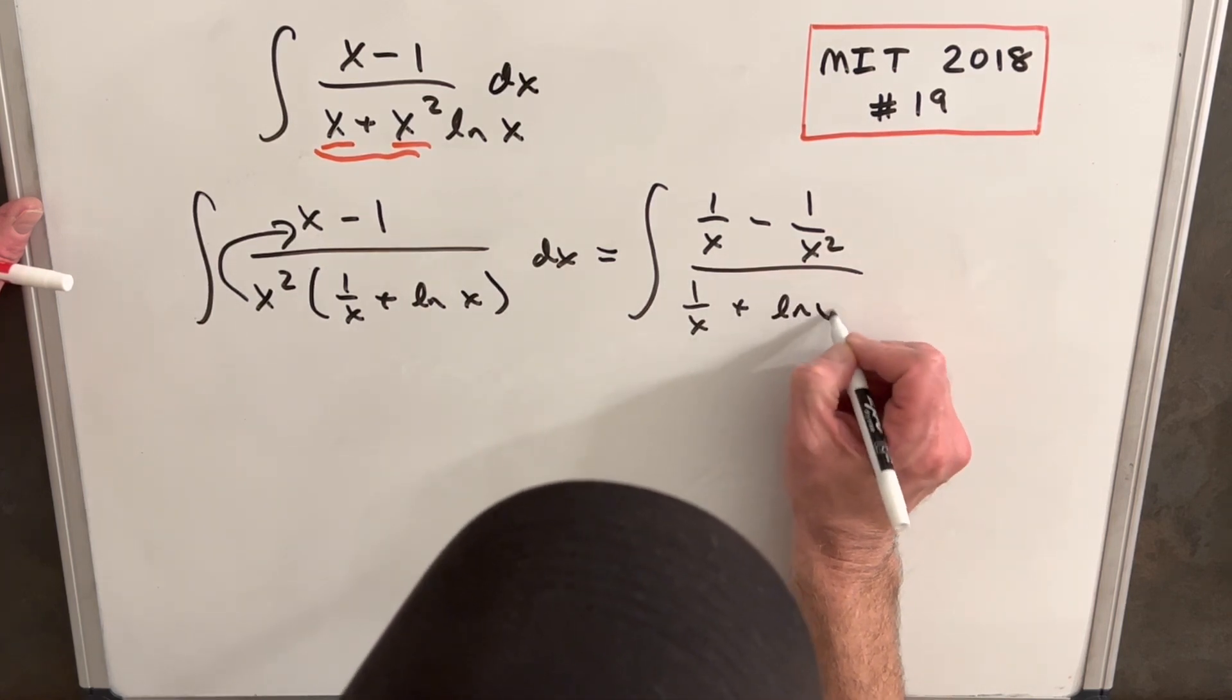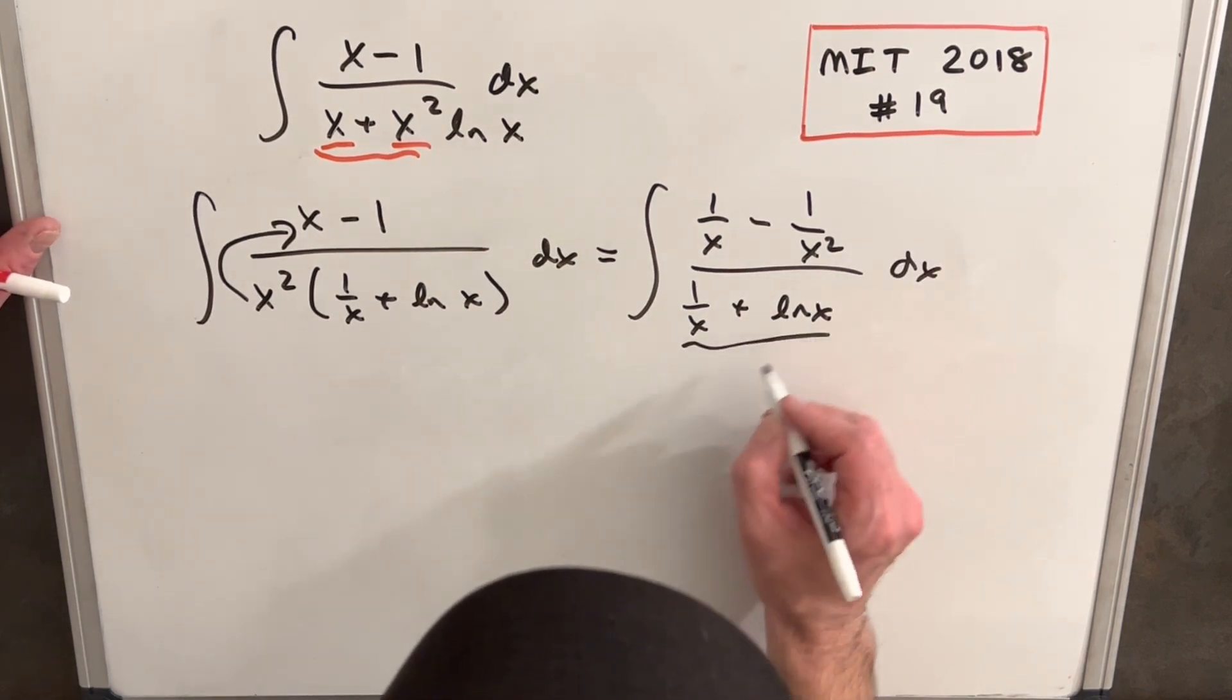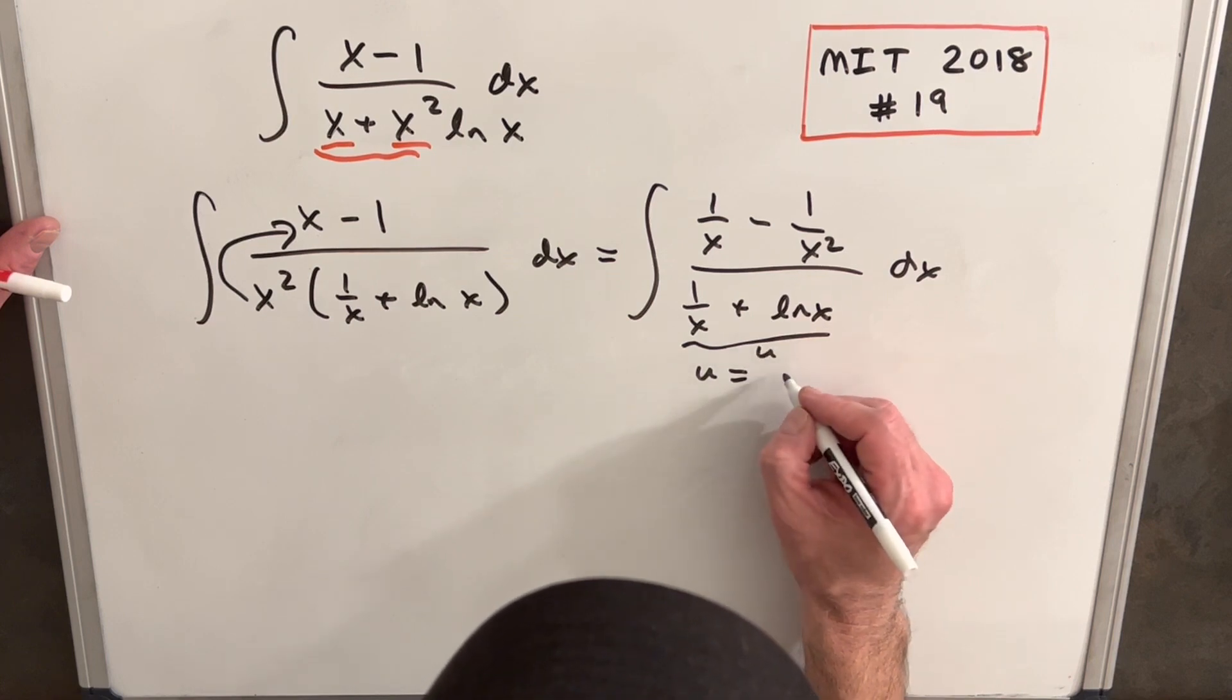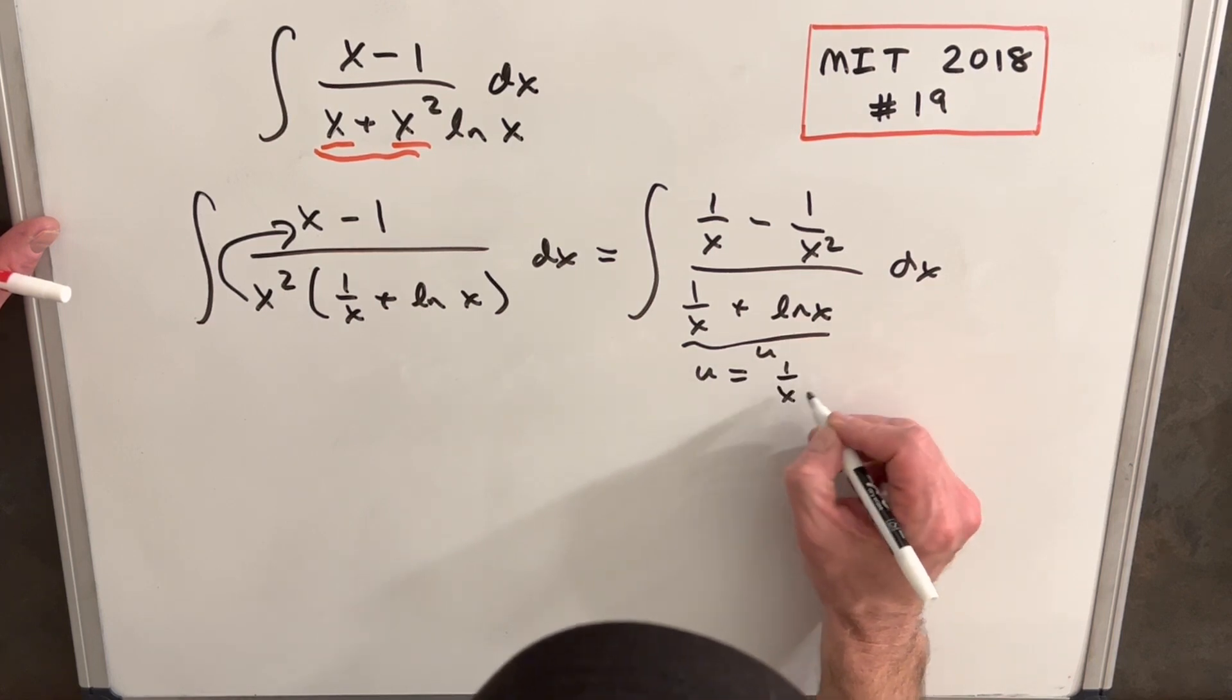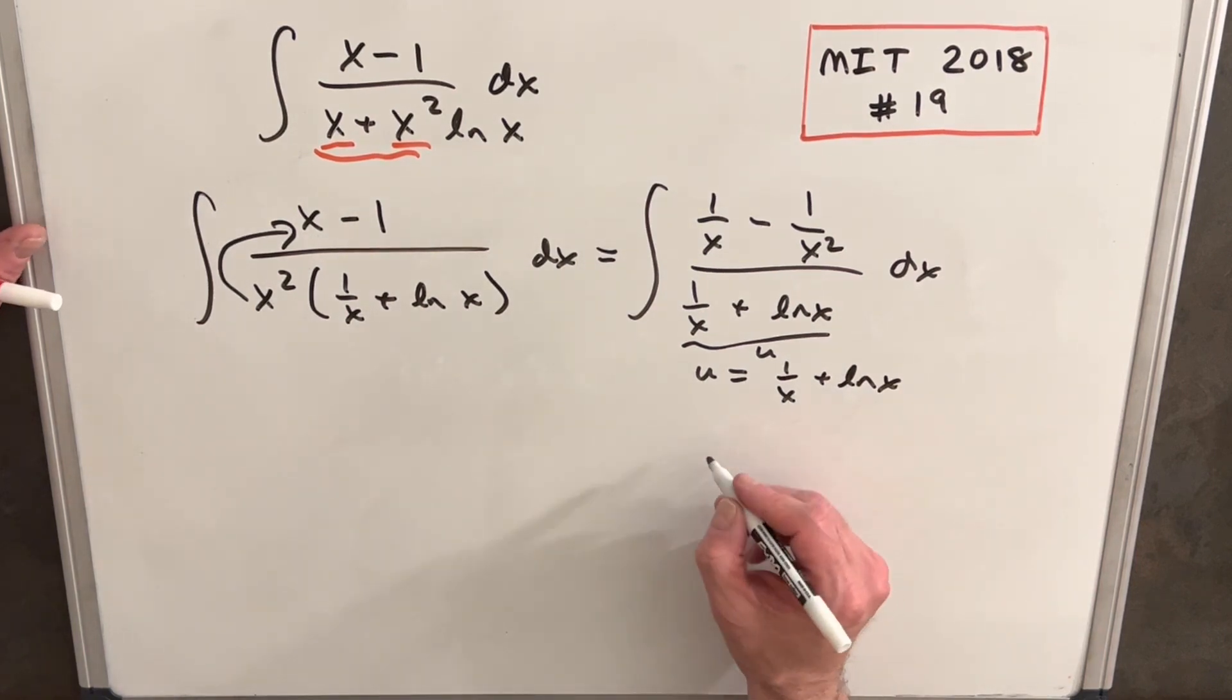Now we'll make this whole thing our u. So our u is going to be 1/x + ln(x). Take our derivative.